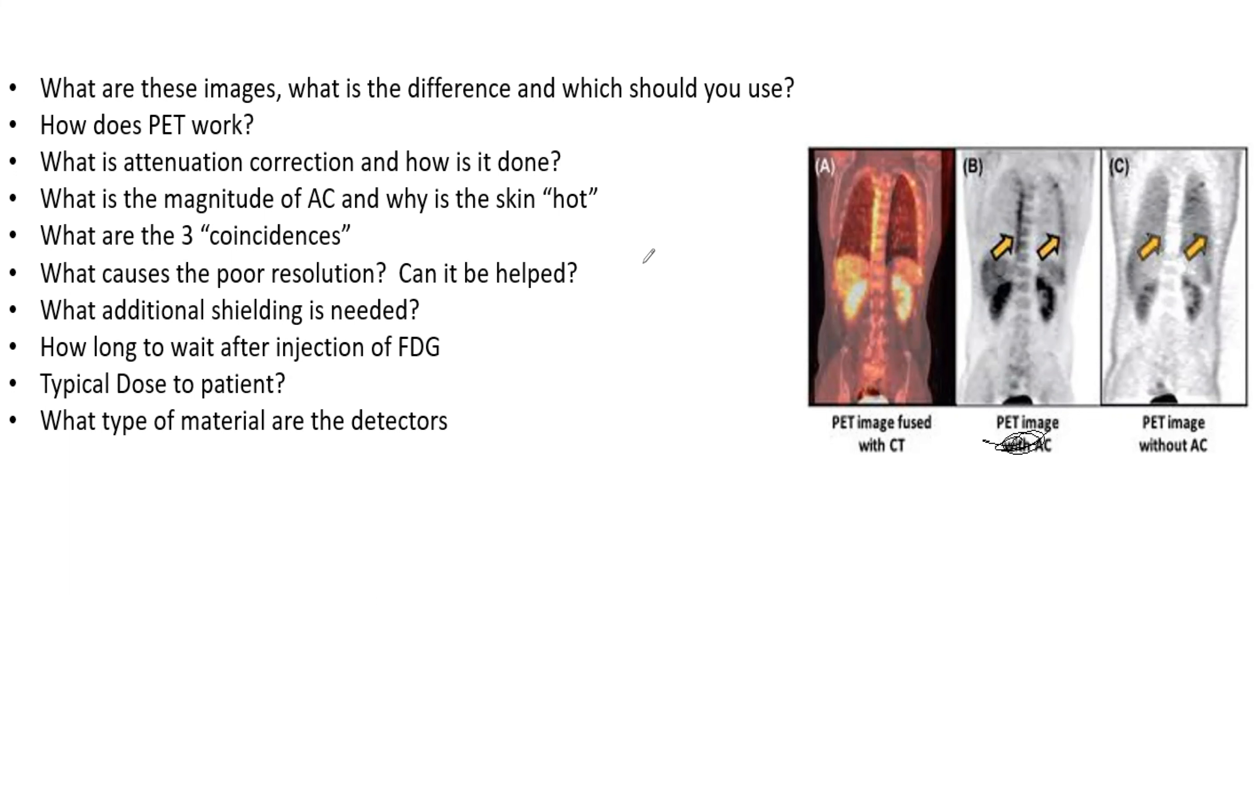So how does PET work? There are detectors that are wired by coincidence circuits. There's an event only if there's a pulse in both detectors within 10 to 20 nanosecond time limits. So we gain projections that make a sinogram, which we can filter back project to get an image. We use FDG, which is a positron emitting tracer in a patient. Those positrons interact with the electrons and make 0.511 MeV photons that are emitted and those are what's detected.